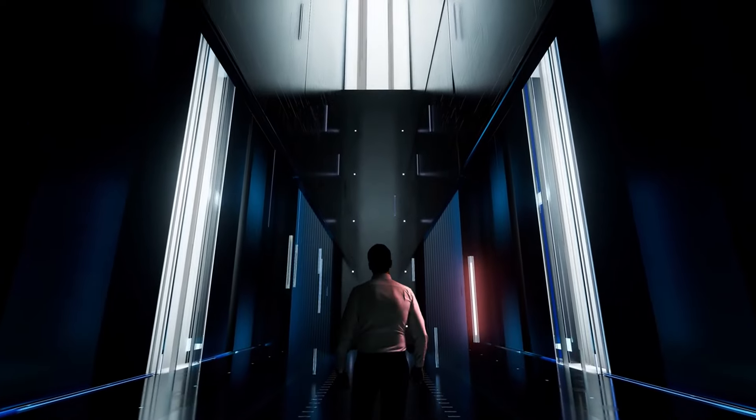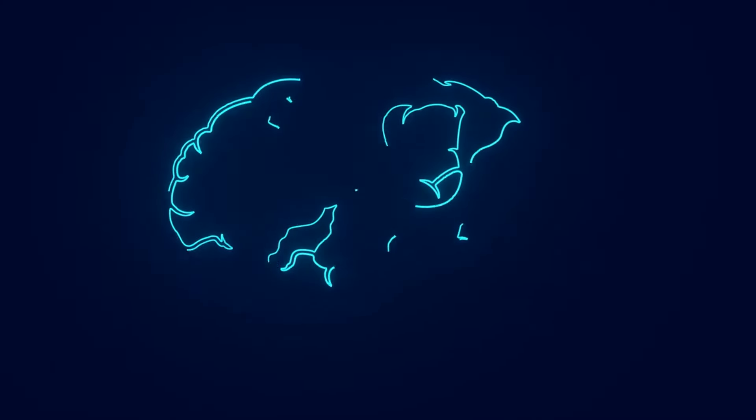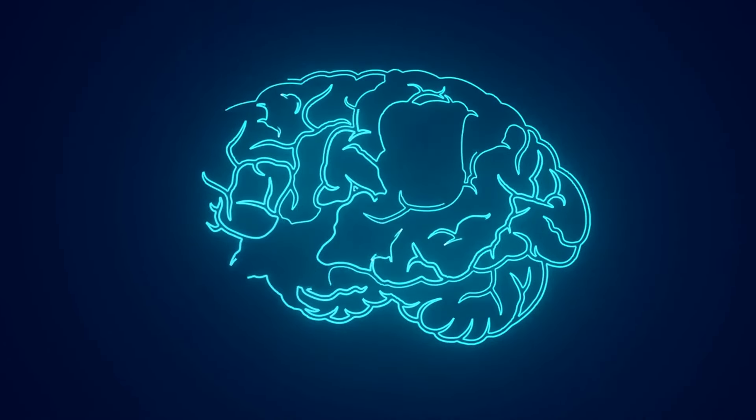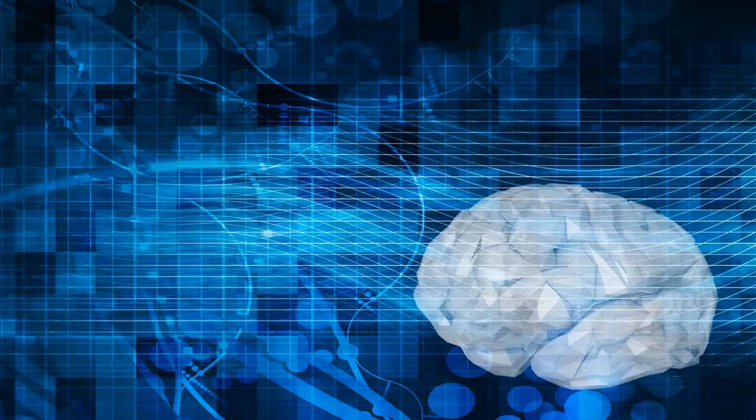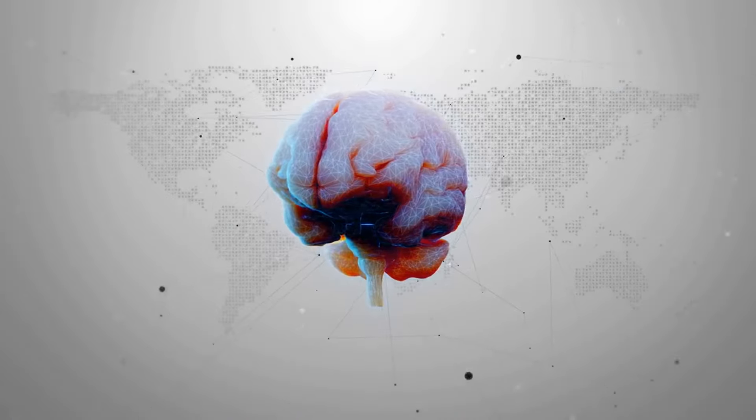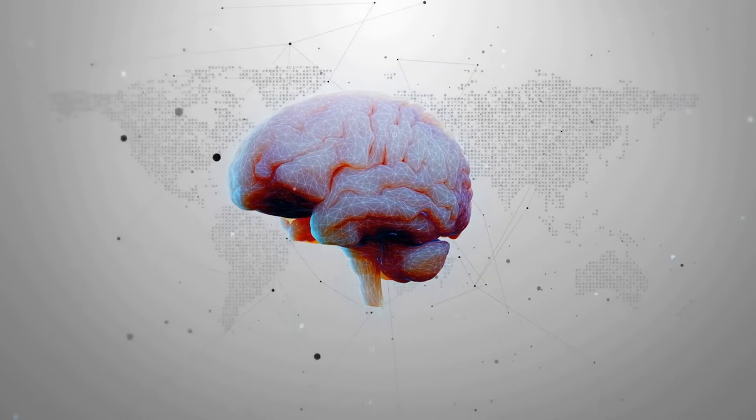The brain-computer interface revolution. Forget headsets. Musk envisions Neuralink chips directly implanted in our brains, merging human and machine thinking. Think instant language learning or downloading knowledge straight into your noggin. Sounds cool, but also raises some serious privacy concerns.